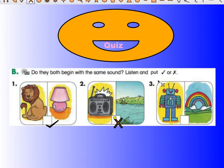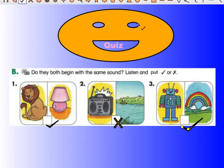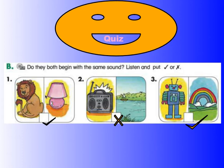Number three: robot, rainbow — do they have the same sound? Yes, the sound R — true. So the answers are: number one, lion and lamb — true; number two, regu and lick — false; number three, robot and rainbow — true.